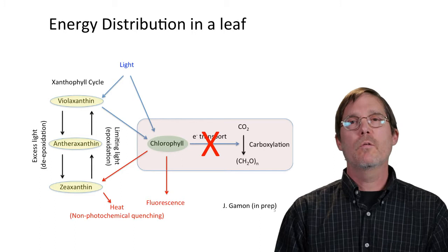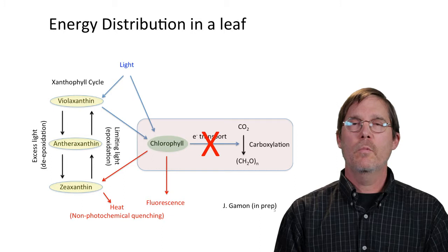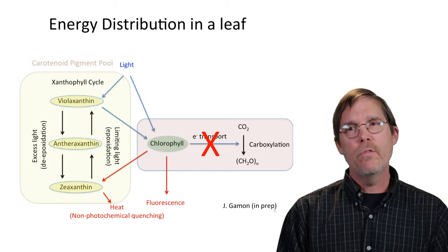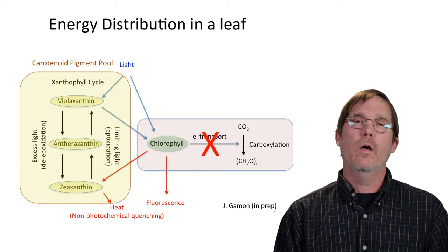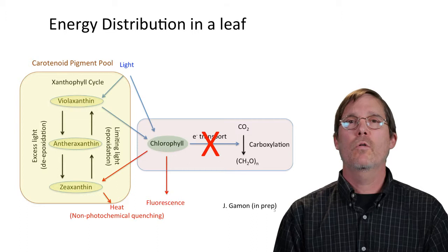This process safely dissipates the energy as heat. It's also called non-photochemical quenching because we're quenching the fluorescence signal. The take-home message is that the xanthophyll cycle is intimately involved with the photoprotection of chlorophyll under stress. All of these xanthophyll cycle pigments are part of a larger carotenoid pigment pool size, and we're looking at both the xanthophyll cycle and the larger pool size relative to chlorophyll as an indicator of photosynthetic activity and stress.